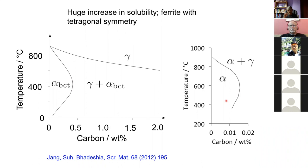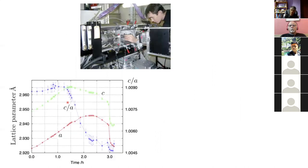This could be the reason why carbon remains inside the bainitic ferrite until you temper long enough for precipitation reactions to happen. The values obtained are consistent with the measured excess carbon, although the calculations are only for iron-carbon whereas the actual alloy is more complex. We predict bainitic ferrite should be tetragonal, and indeed synchrotron X-ray measurements confirm that it is — the C/A ratio remains roughly constant on heating until tempering reactions cause it to drop.